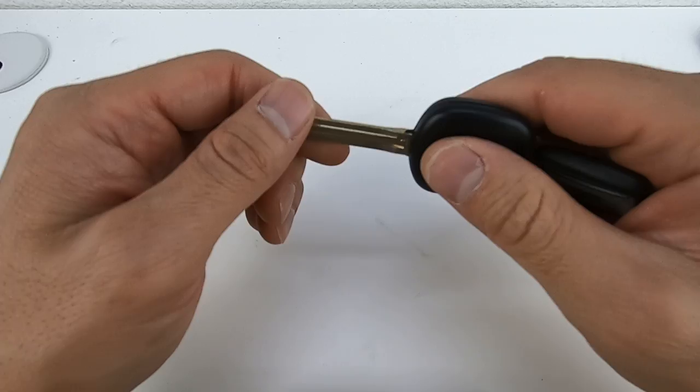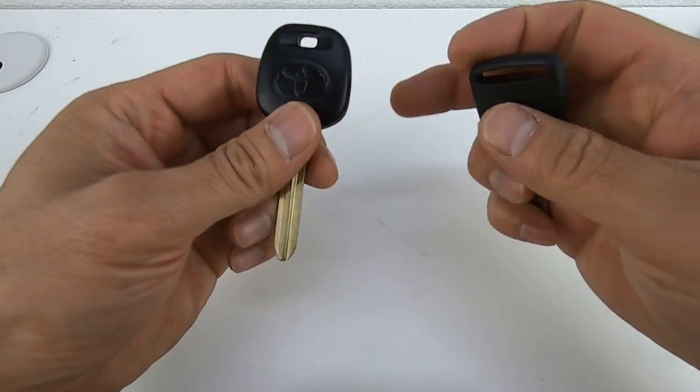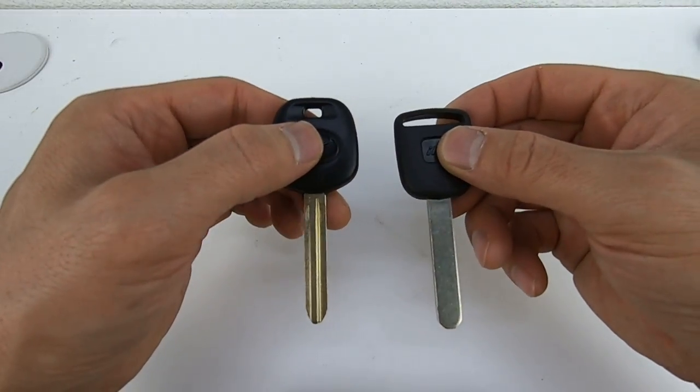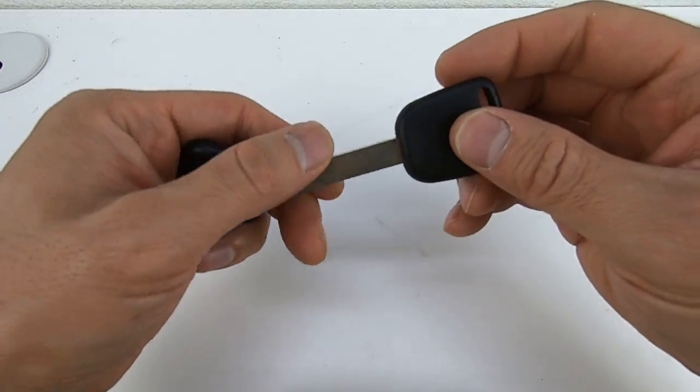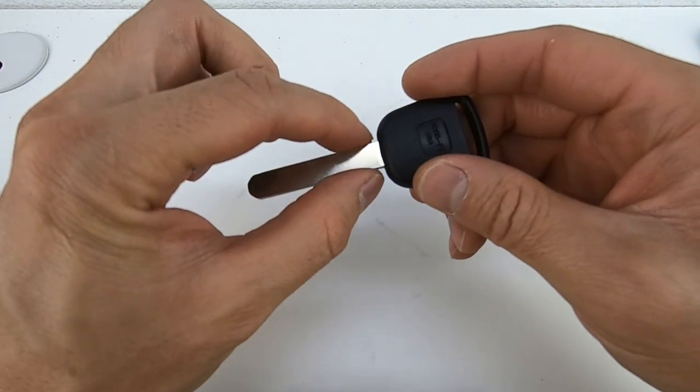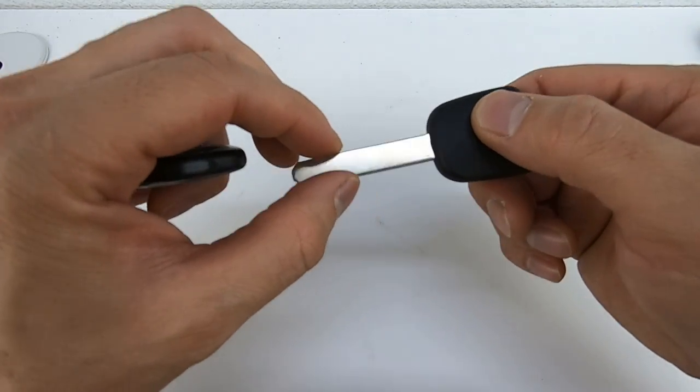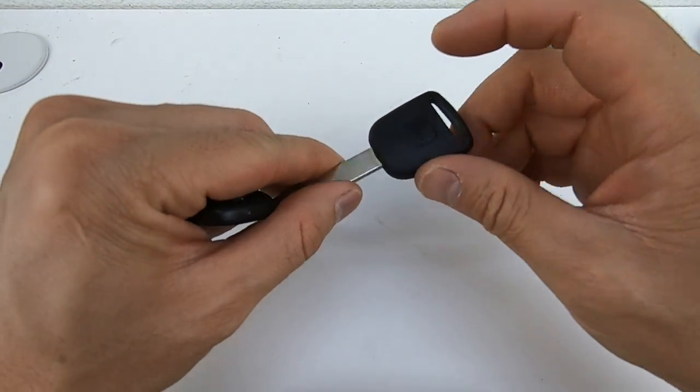And so that is the transponder. Here we have a laser cut key with the transponder in it, so this is added security because it's a high security key cut and then it has the chip inside as well.